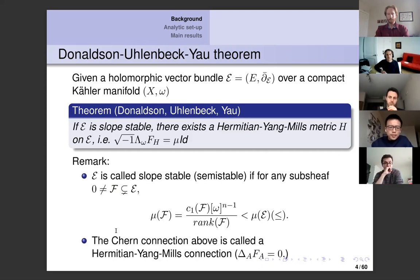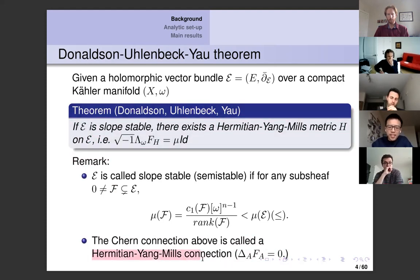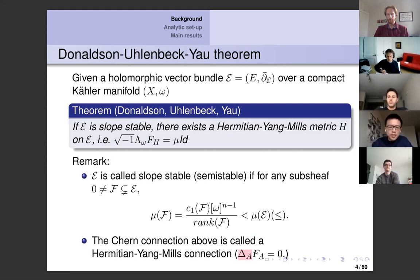This is slope stability. In the literature, the Chern connection involved in this theorem is usually referred to as the Hermitian-Yang-Mills connection. By using the Kähler identity, one knows that a Hermitian-Yang-Mills connection implies the curvature is harmonic, so it is indeed a Yang-Mills connection.